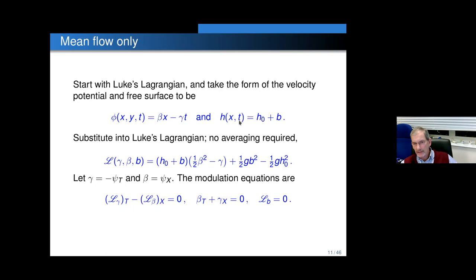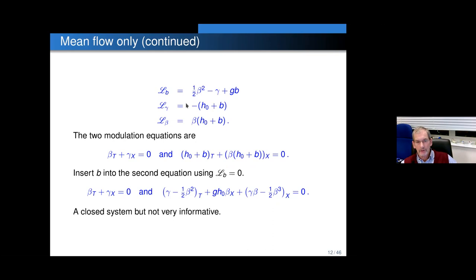Suppose we only have a mean flow — uniform flow in classical hydraulics, just a constant depth and a constant velocity, one-dimensional open channel flow. The velocity potential is just beta·x minus gamma·t, and the depth is just that, so these are really constants. We can substitute those into Luke's Lagrangian — no averaging required — and modulate that trivial solution. Let gamma equal a slowly varying phase derivative, and beta a slowly varying x-derivative. The modulation equations are these. L_gamma is the depth minus the depth, and L_b looks like a mass flux.